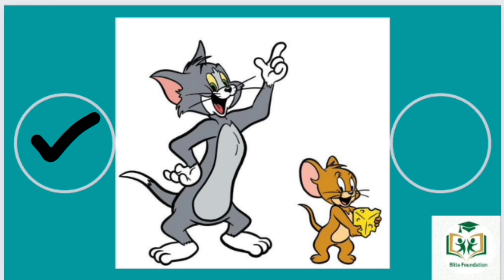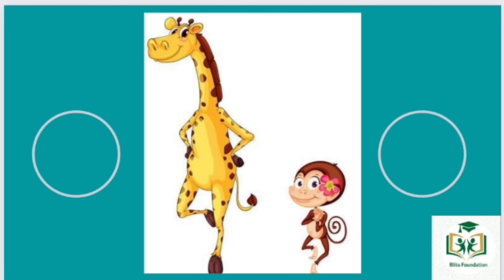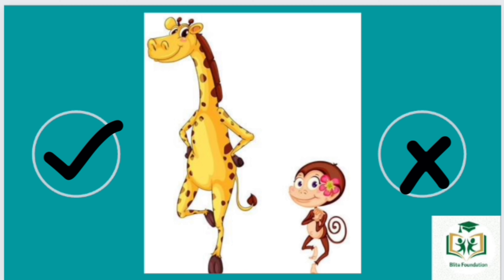Tom is the taller one. Jerry is the shorter one. Left one is the taller one. Right one is the shorter one.